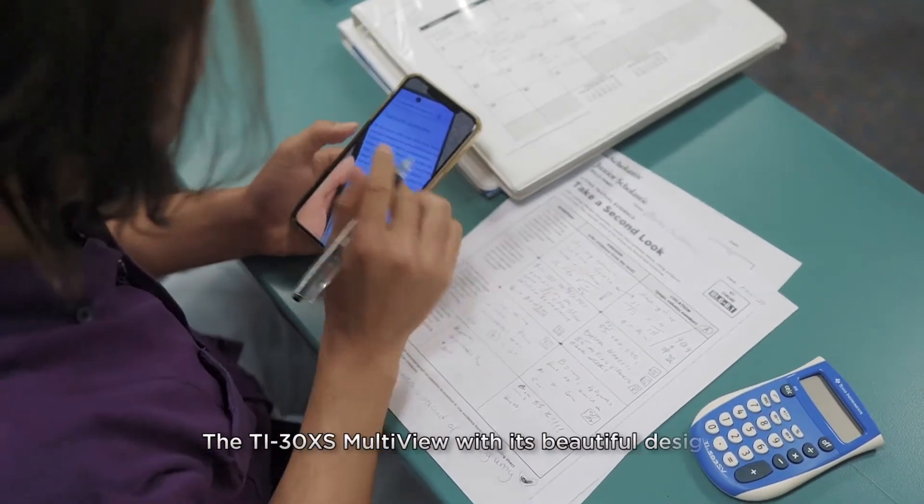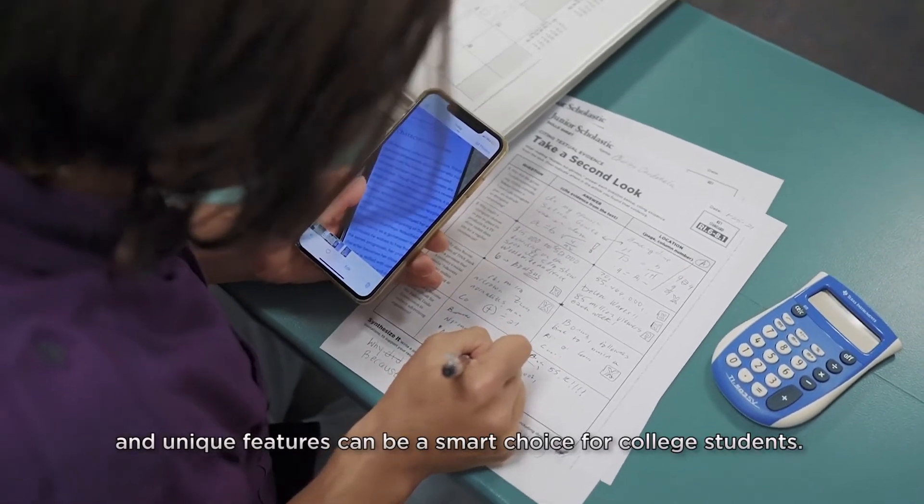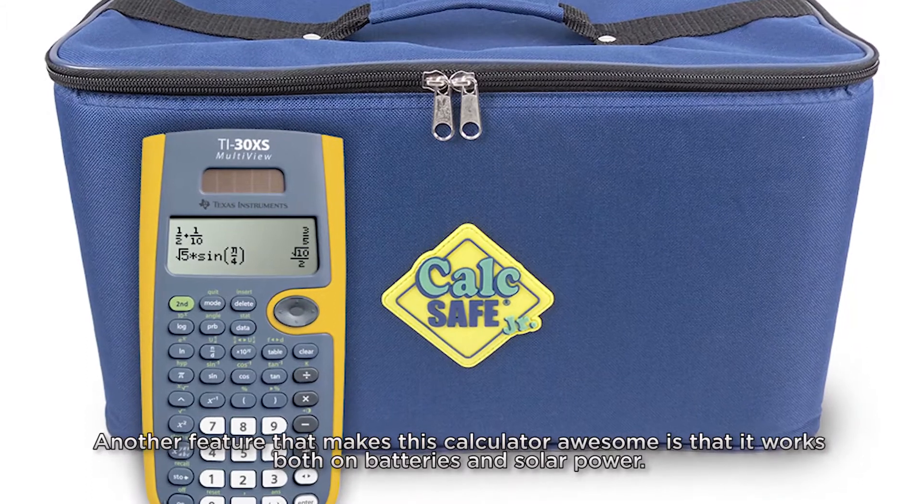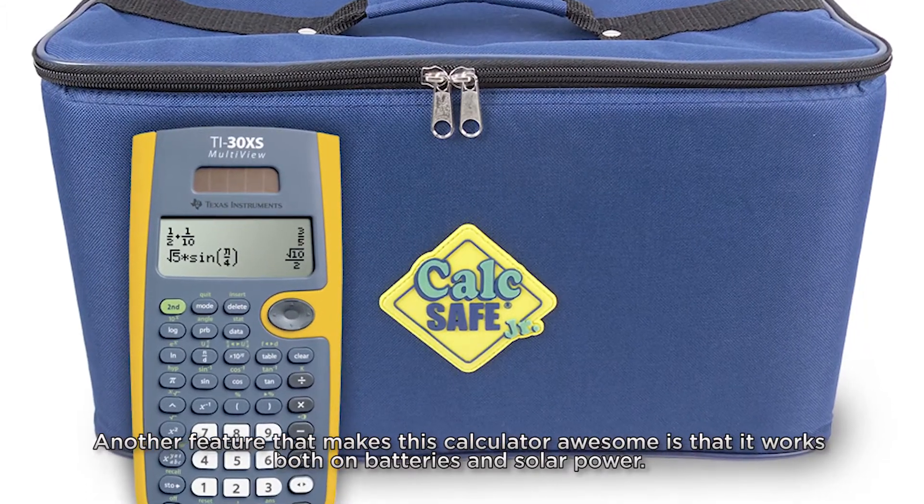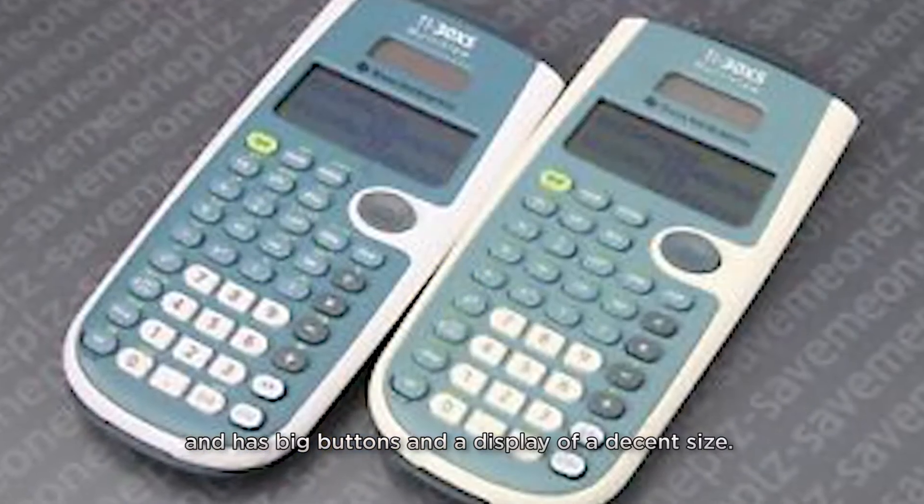The T30XS MultiView with its beautiful design and unique features can be a smart choice for college students. Another feature that makes this calculator awesome is that it works both on batteries and solar power. This device is easy to use and has big buttons and a display of a decent size.